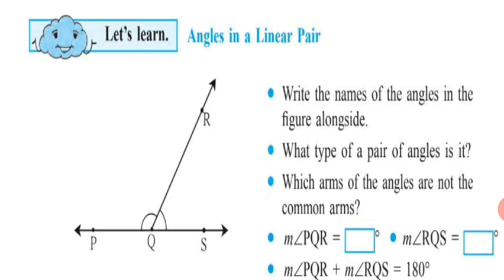Next, find the measure of Angle PQR and Angle RQS. This activity is in your textbook on page number 29. You are going to make use of a protractor to find the measures of the two given angles.